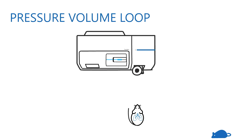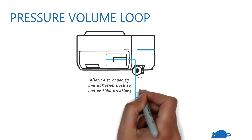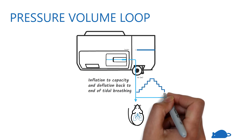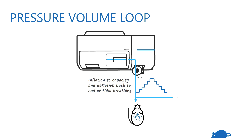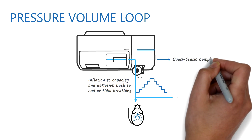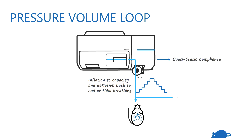In the pressure-volume measurement, the lungs are inflated to total lung capacity and then deflated in a stepwise manner. The flexiVent measures the quasi-static compliance of the lung across the entire inspiratory capacity.